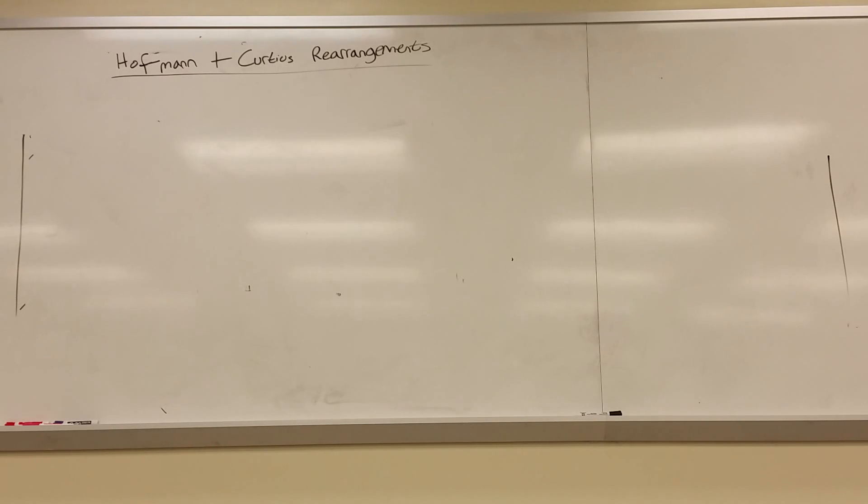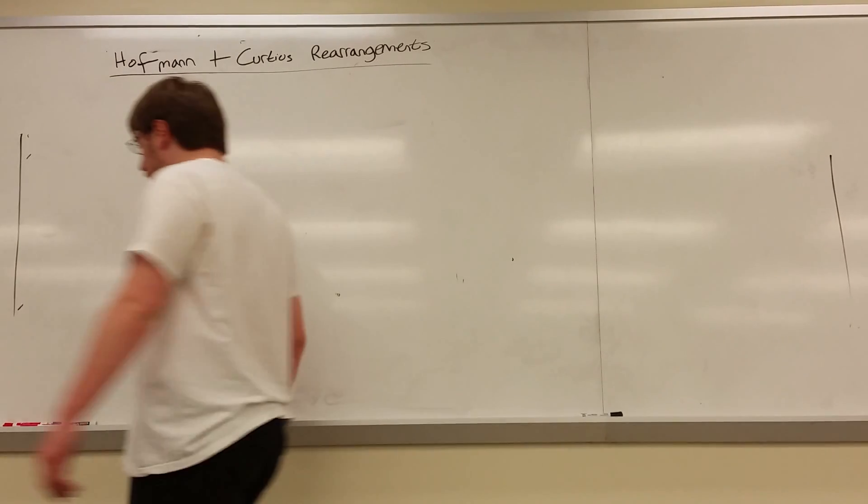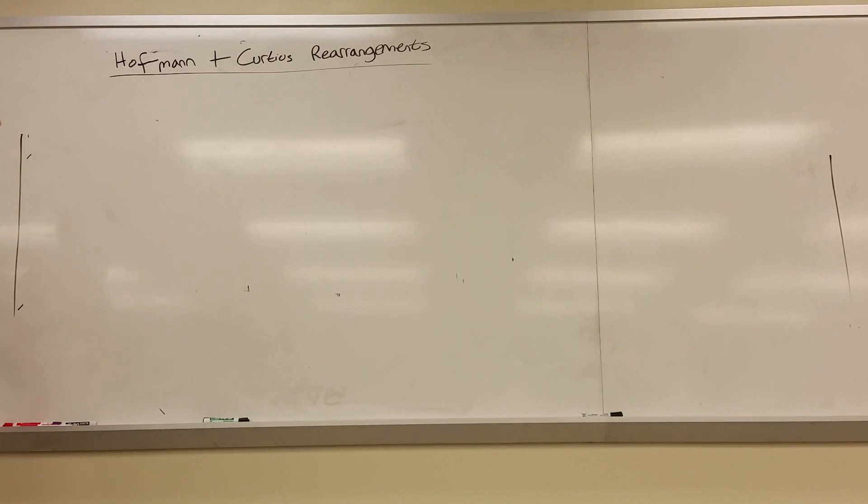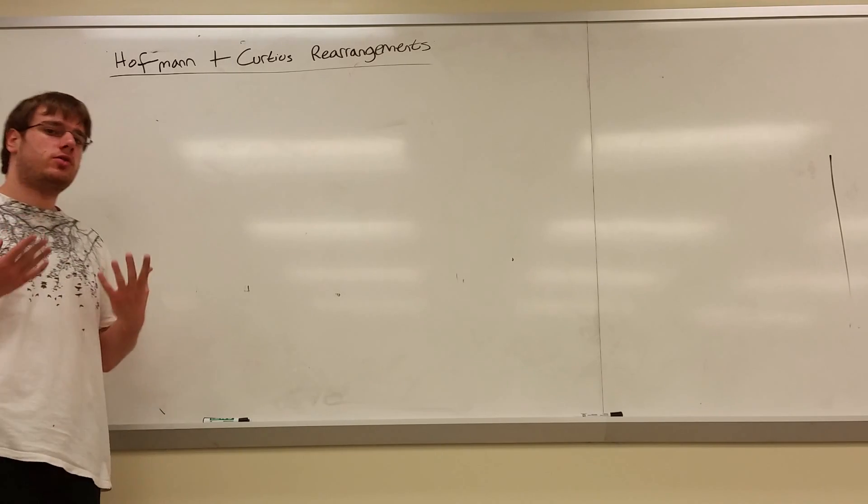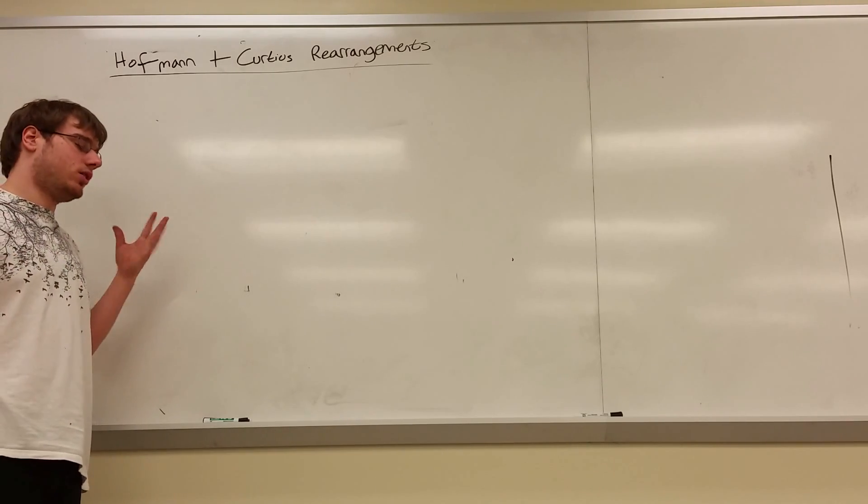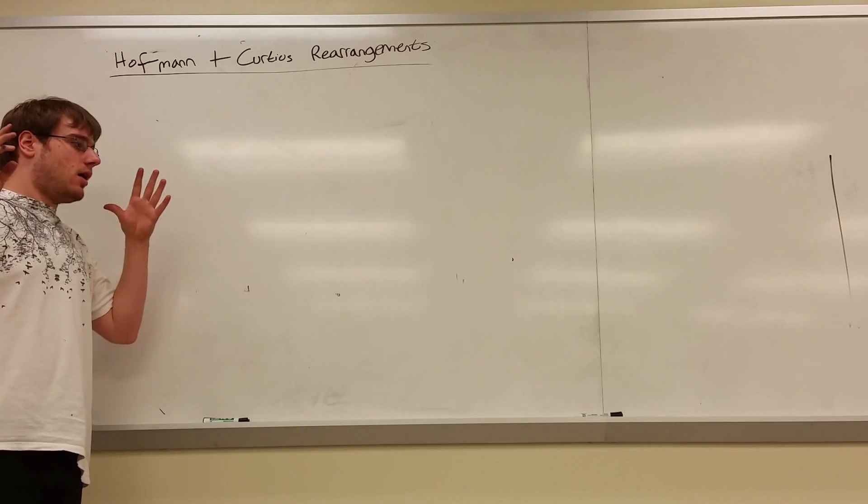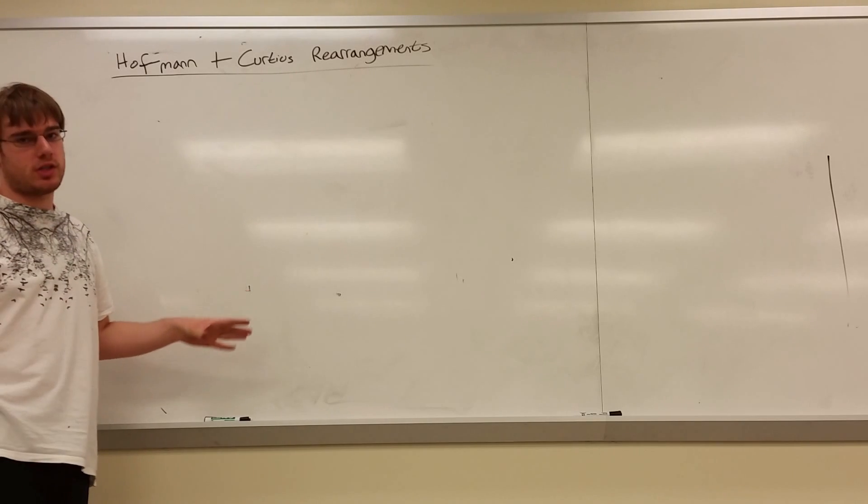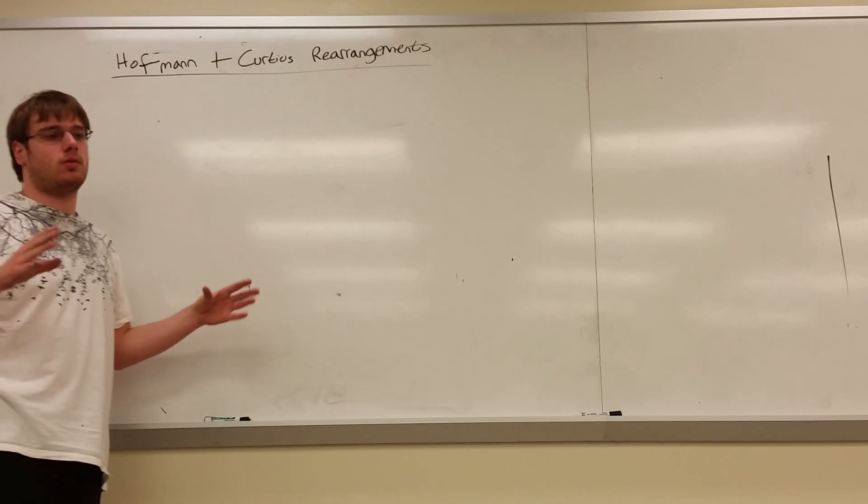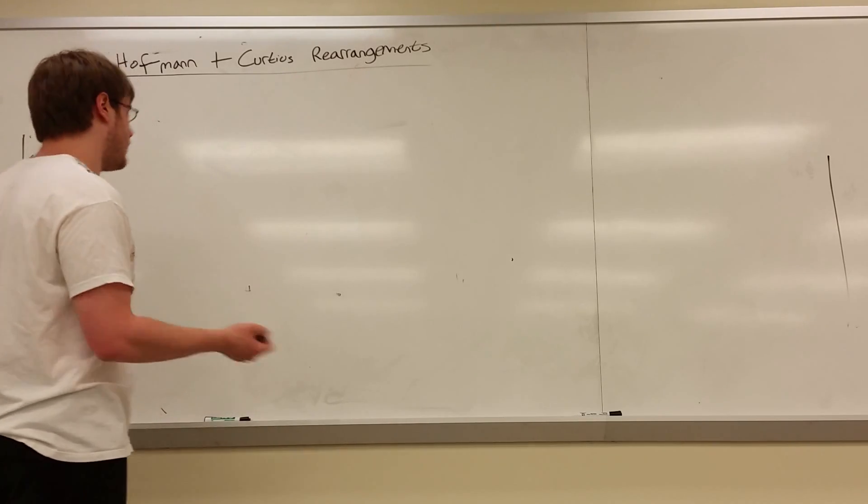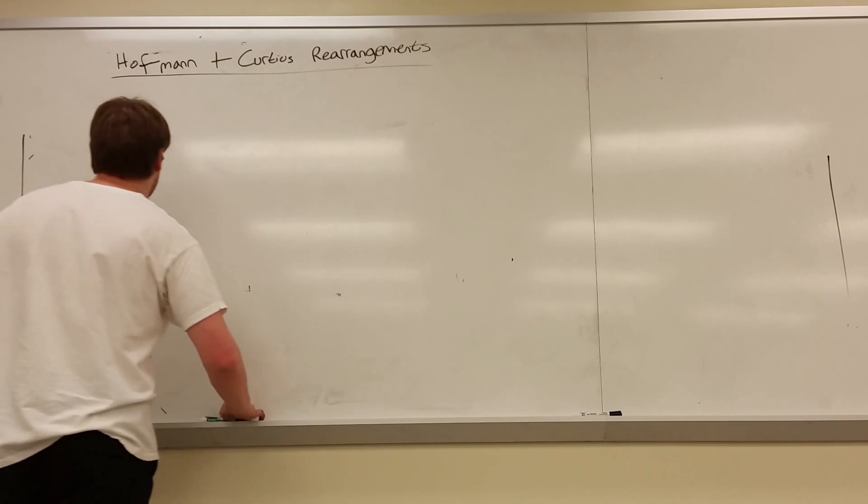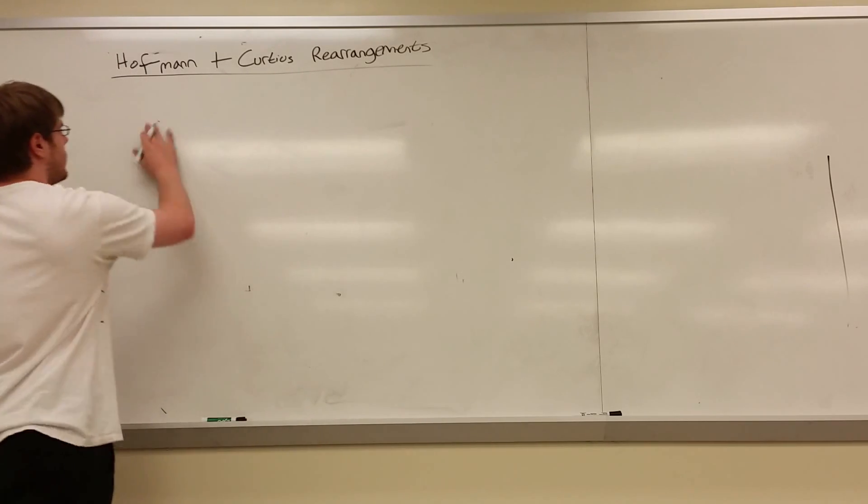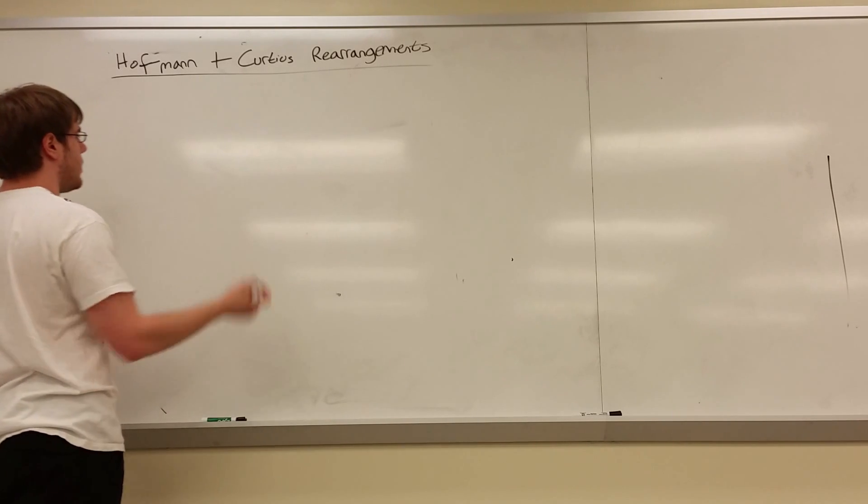Okay, I have saved the best for last with the chapter 20 material, and they're the rearrangements, the Curtius and the Hoffman rearrangement. I'm going to start with what you should expect when you see them and how to recognize them, and then we're going to go through the mechanism, and hands down these mechanisms are probably one of the most confusing mechanisms you will ever see in all of Orgo.